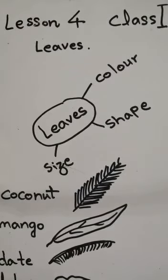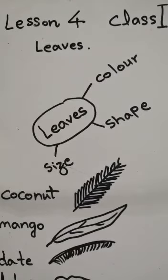In the previous video, we learned about different types of plants: small, big, very big, tall, climbers, those which are present on the hills, and those which are present in the water.